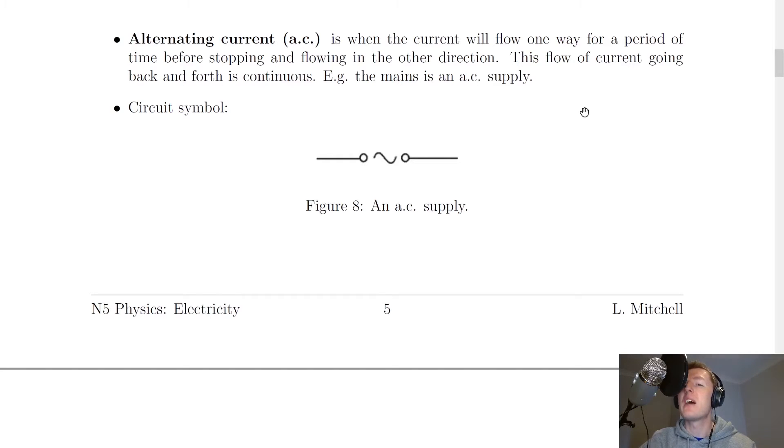And for typical mains supplies in the UK, current is going to change direction about 50 times each second. So it's this back and forth flow of current. You'll notice the circuit symbol here has two little circles with a sort of squiggly line or little wave pattern in the middle. And this is to represent the changing current or the changing voltage. You might also see this circuit symbol with a circle around it sometimes.